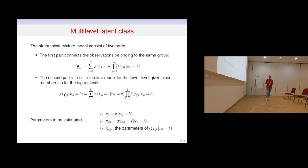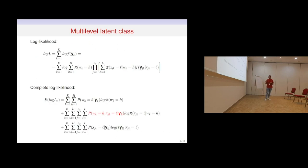The total parameters to be estimated are the mixing proportions for the higher level H, the mixing proportions for the lower level P_L given H, and the distribution parameters. We write the log-likelihood, and in order to apply the EM algorithm we need the expectation of the complete log-likelihood. We observe that we need to consider the joint conditional probability between the two membership variables W and X given the observed data.